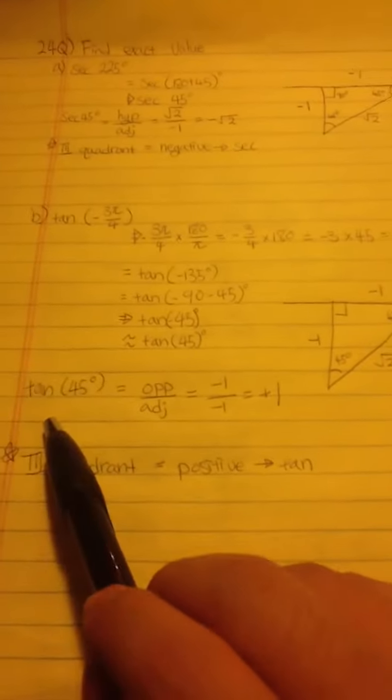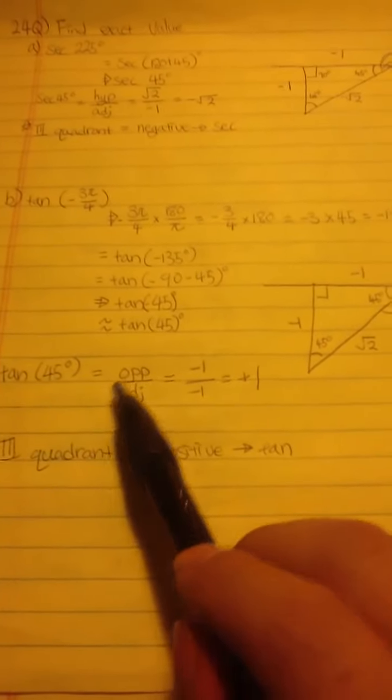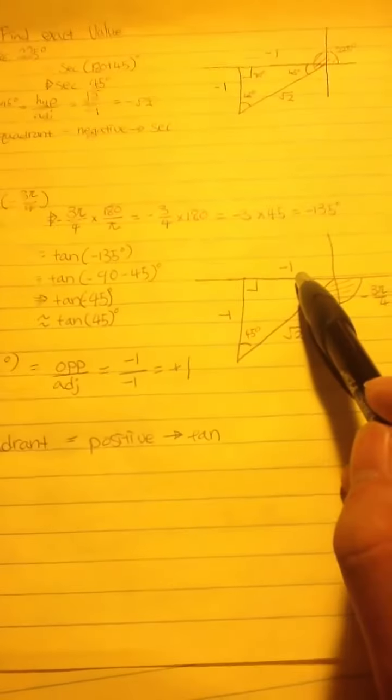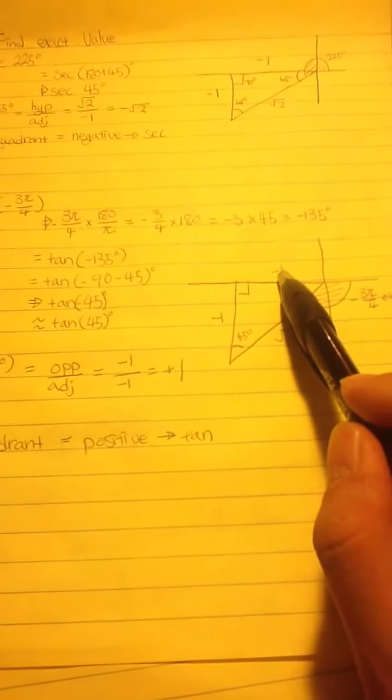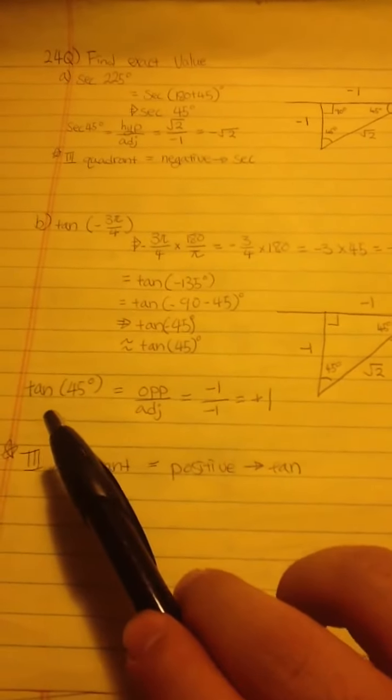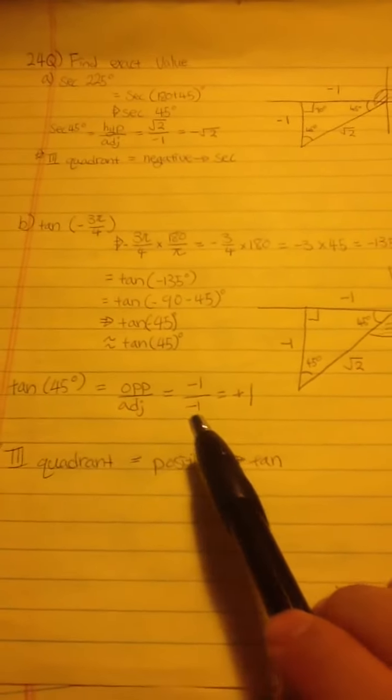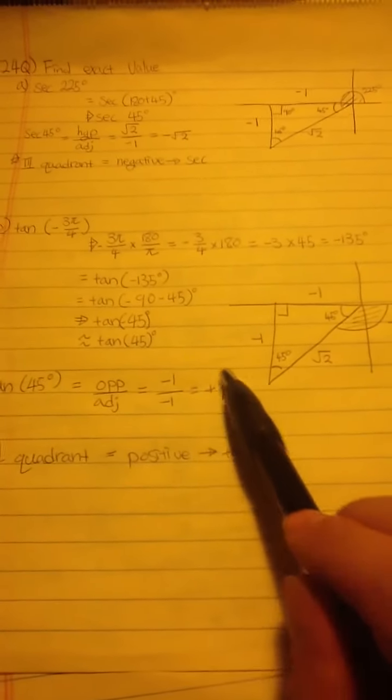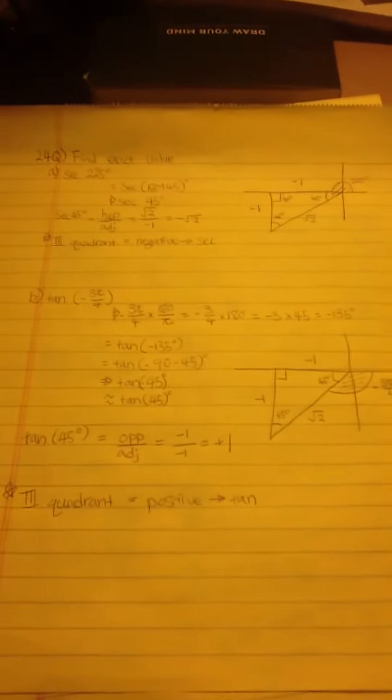And find tangent 45 degrees, which is opposite over adjacent. Opposite, which is negative 1, and adjacent, which is negative 1. So the answer to tangent 45 degrees, or tangent negative 3π over 4, is positive 1. Thank you guys.